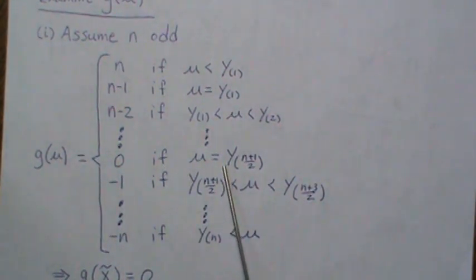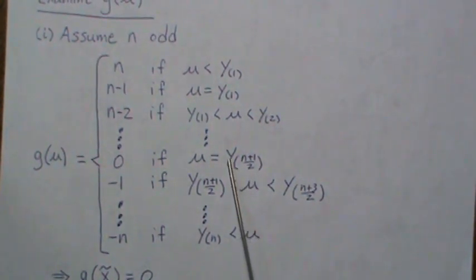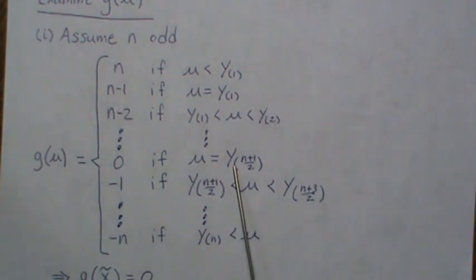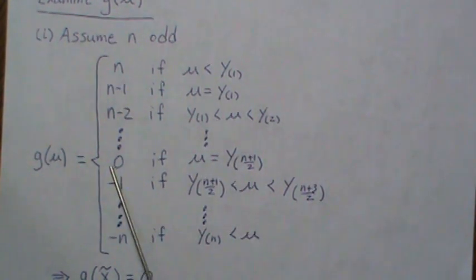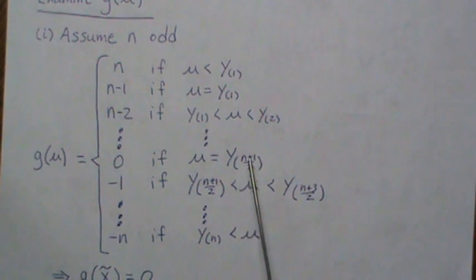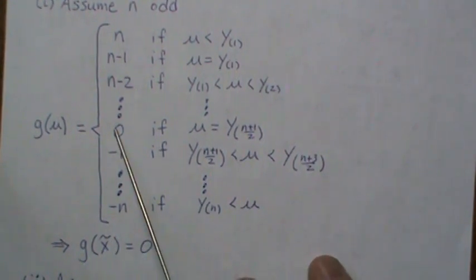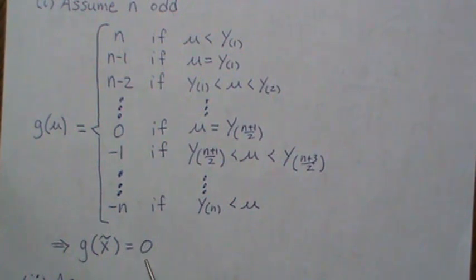And then if it equals that middle value, of course, then g of mu for that term that it equals that is 0, and the rest are 1s and minus 1s, but they all add up to 0. And then as we progress bigger and bigger and bigger, then these values start to become negative. So where is g of mu 0? It's at the median. So g of the median is 0.